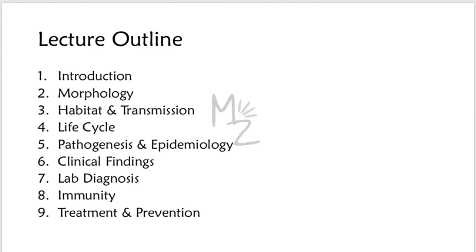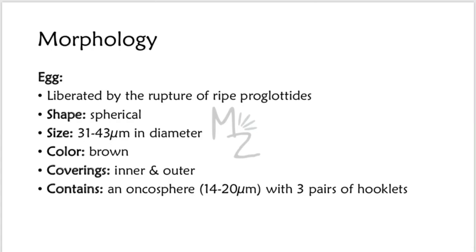Here is the lecture outline. We'll talk about morphology, habitat and transmission, life cycle, pathogenesis and epidemiology, clinical findings, lab diagnosis, immunity, treatment, and finally prevention. Morphology: it has three forms — eggs, larvae, and the adult worm.